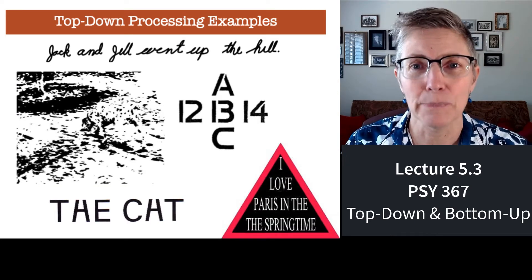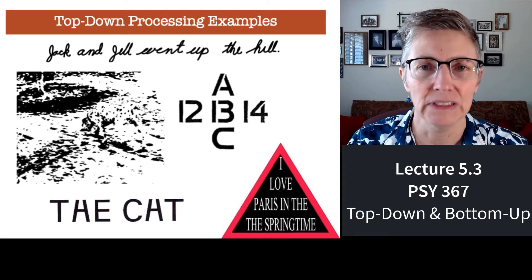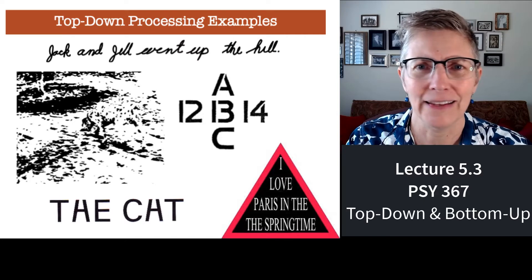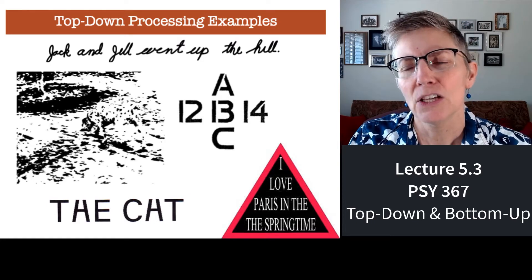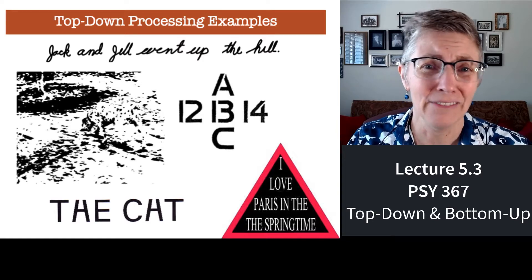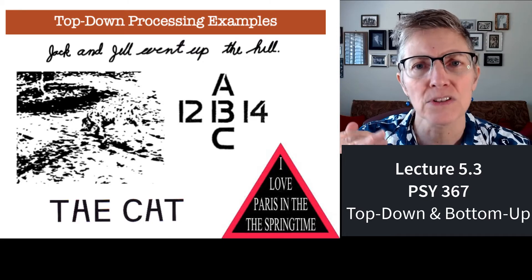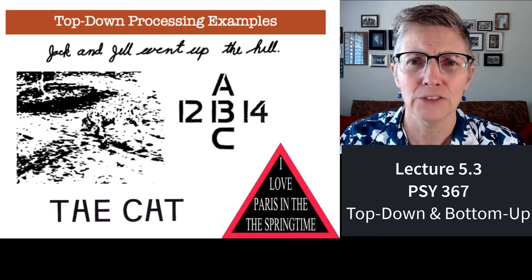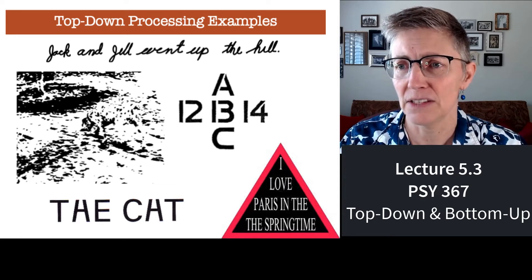Here are some examples of top-down processing. On the top, you may see the words 'Jack and Jill went up the hill' — part of a nursery rhyme. If you look at the word 'Jill,' it looks a lot like 'gel,' or the word 'went' really looks like 'event,' and I don't know if it's 'hill' or 'hell.' But I know the story, so when I look at it I see 'Jack and Jill went up the hill.' Someone who didn't know that nursery rhyme might say 'Jack and Jill event up the hell.'